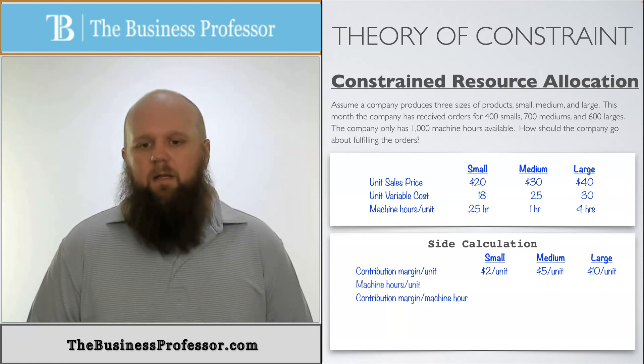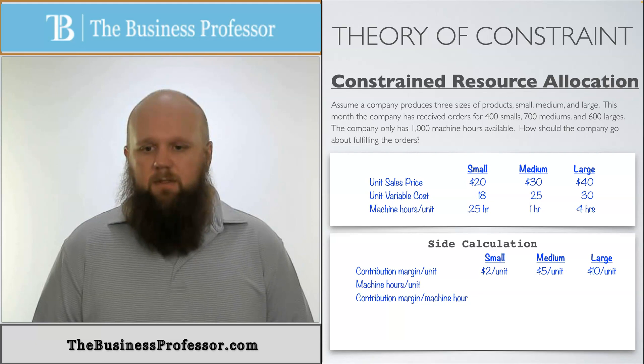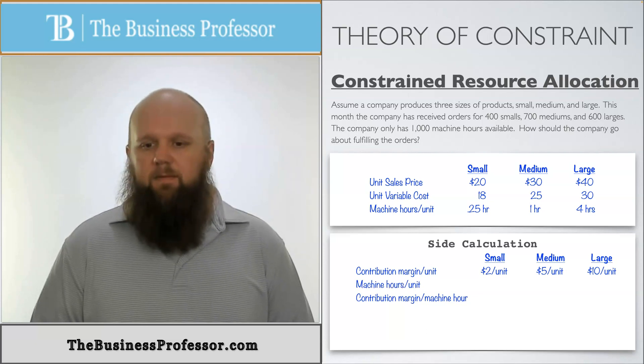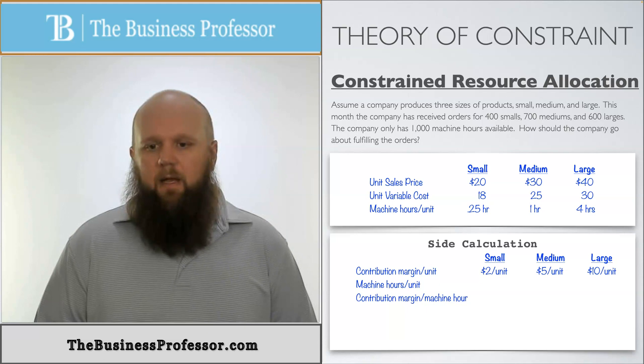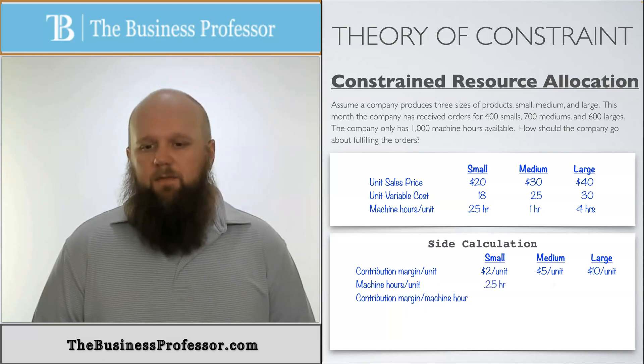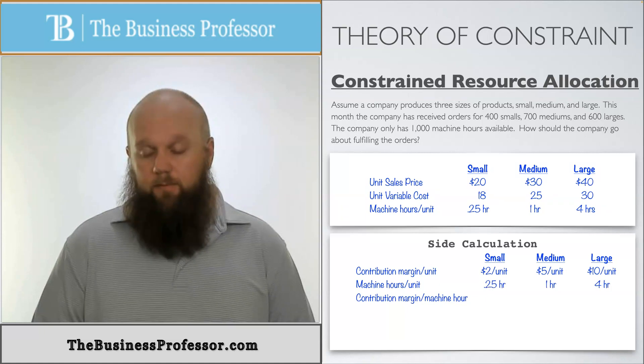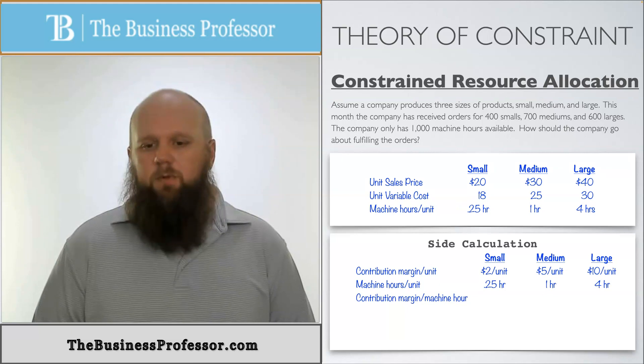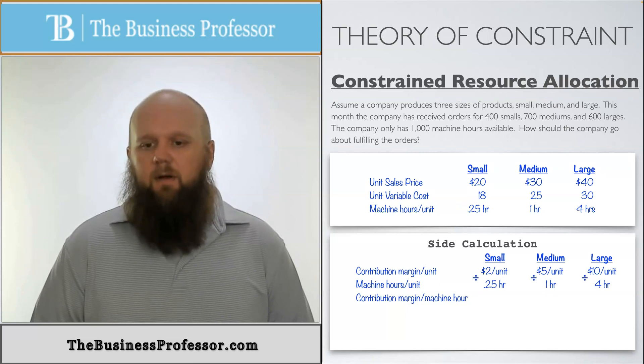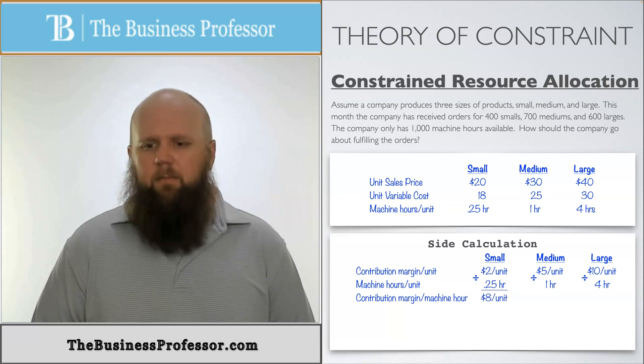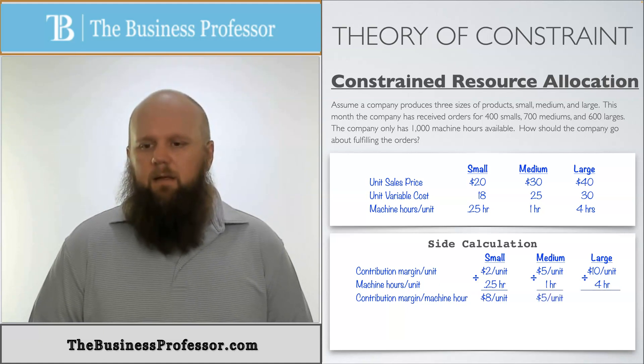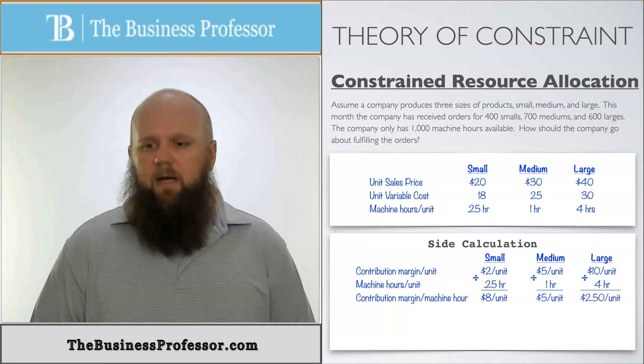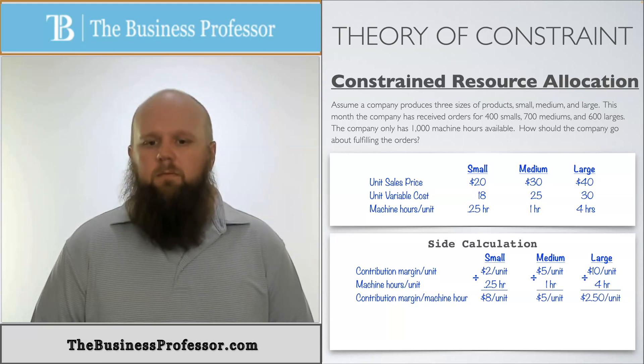So the way we do that is we take the machine hours per unit that's given to us and divide it into the contribution margin per unit. So if we have $2 per unit and we know it takes us a quarter of an hour to produce one unit, if I divide $2 per unit by 0.25 hours, that's going to give me a contribution margin per machine hour of $8 per unit. If I do the same thing for medium, $5 divided by one hour is going to give me $5 per unit. And then finally, $10 divided by 4 is going to give me $2.50 per machine hour.